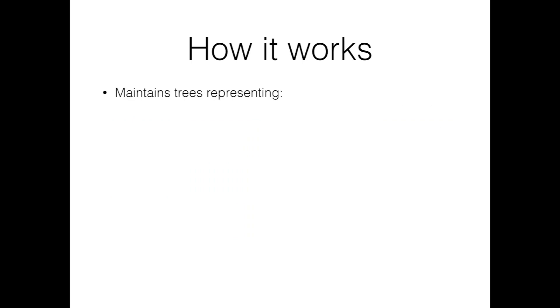On a slightly lower level, change propagation works by maintaining two binary trees. The first tree is the result of calling the filter function for each item — it stores the returned true or false results. This is the predicate tree.